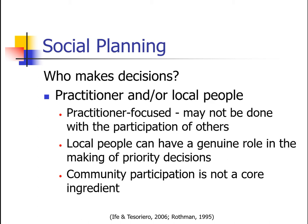Local people can have a genuine role in the making of priority decisions, but often community participation might not be a core ingredient. This is particularly true of government organizations — not necessarily because they don't care, but perhaps due to a lack of ability or understanding of how to gather that information in the first place. People often think it's expensive when it doesn't have to be.